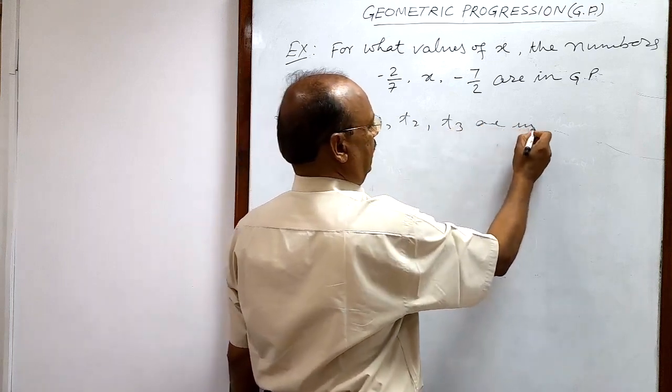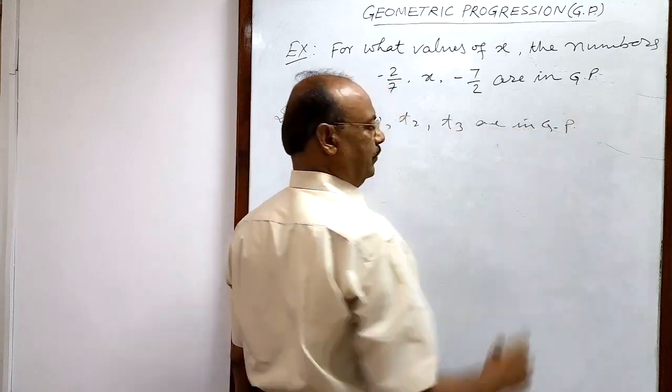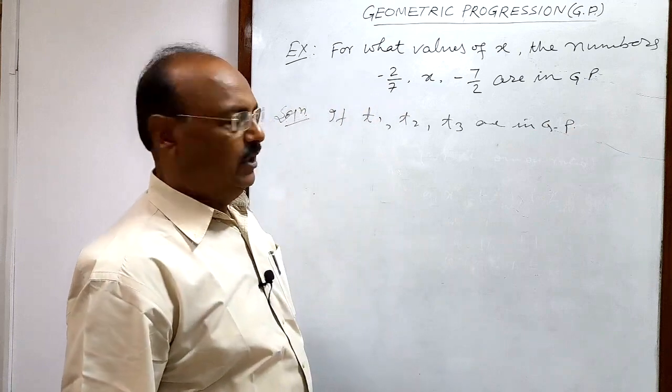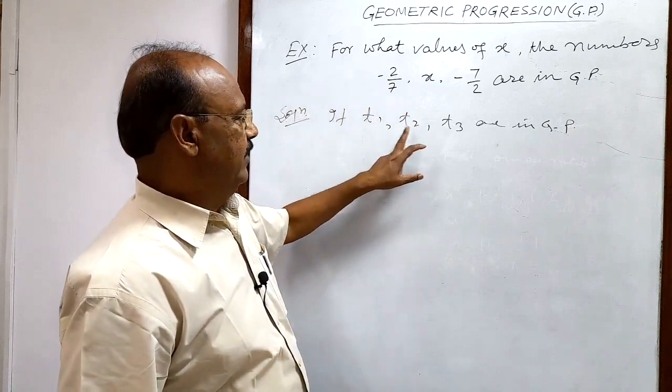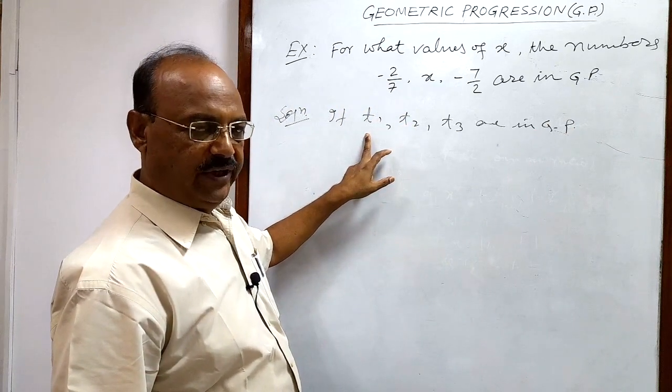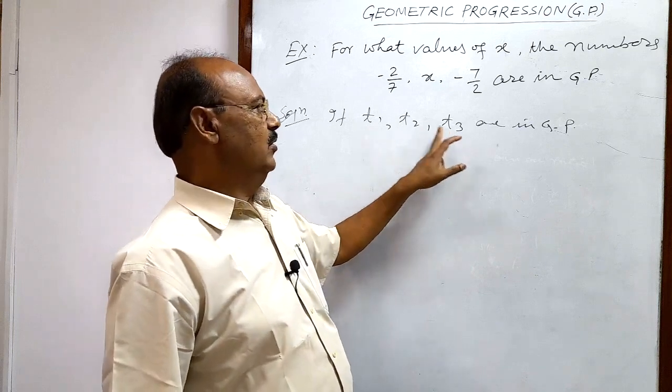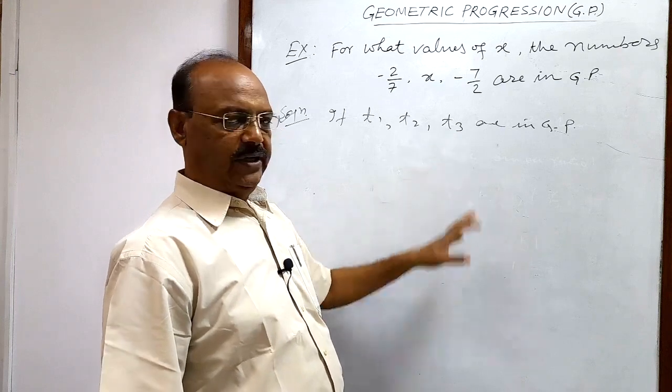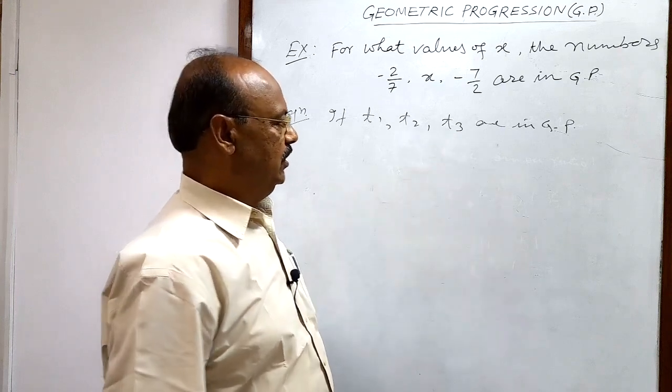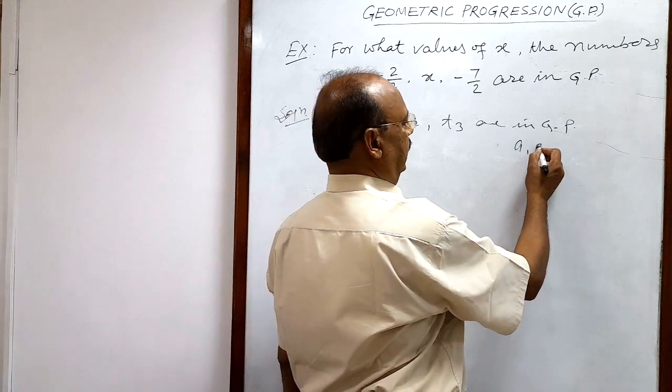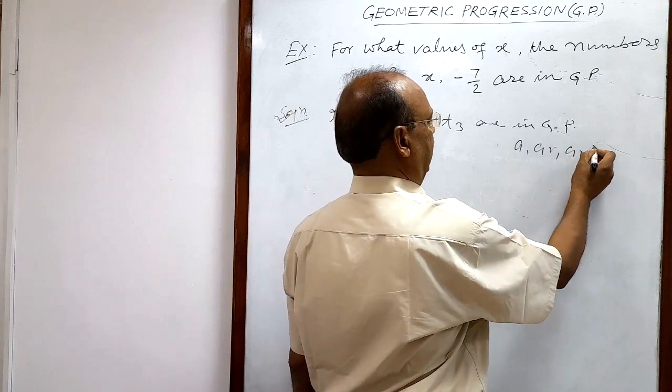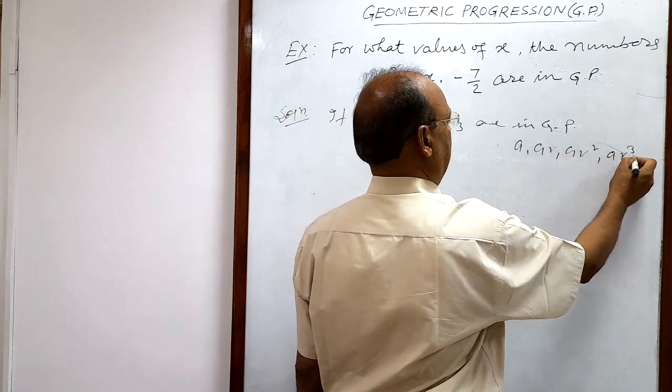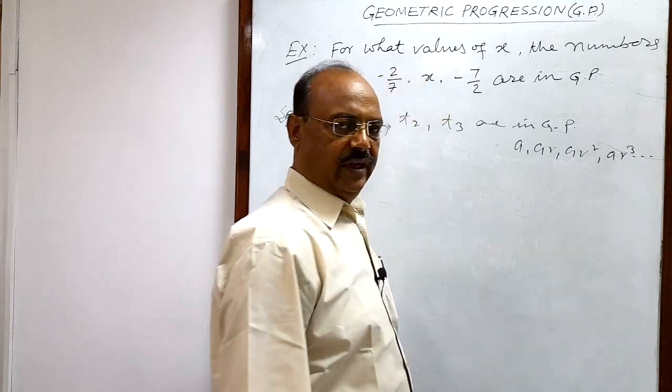then you know that when second term will be divided by first term, it will be equal to when third term will be divided by second term, because this is common ratio. The general format of geometric progression is like a, a times r, a times r squared, a times r cubed, and so on.